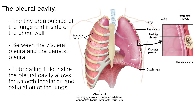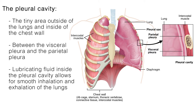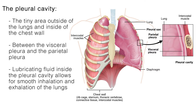The pleural space, or pleural cavity, is the tiny area outside of the lungs and inside of the chest wall. It is between the visceral pleura, which covers the lungs, and the parietal pleura, which is attached to the chest wall. There is a lubricating fluid inside the pleural cavity that allows for smooth inhalation and exhalation of the lungs.